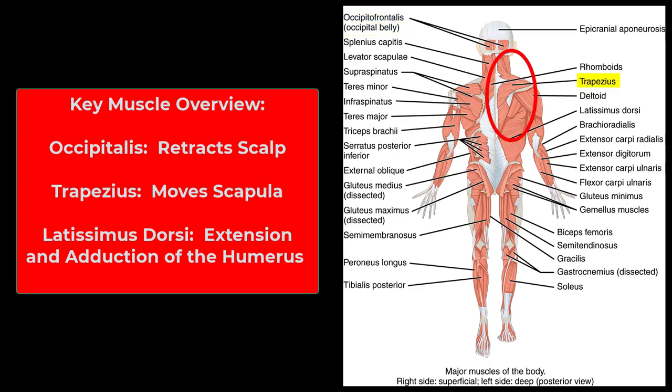Then you have the trapezius — a trapezoid or kite-shaped muscle that moves the scapula. I'll go into more detail in a separate video treating it as three separate muscles. Next, the latissimus dorsi — basically the widest and broadest muscle on your back. Its actions are extension and adduction of the shoulder. Think of doing a pull-up: the latissimus dorsi is the most important muscle there.